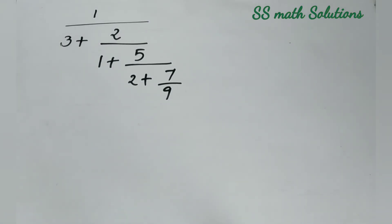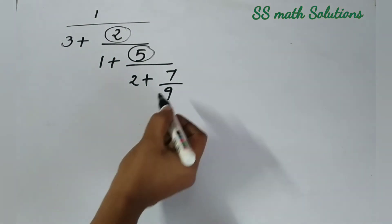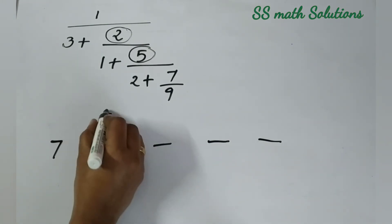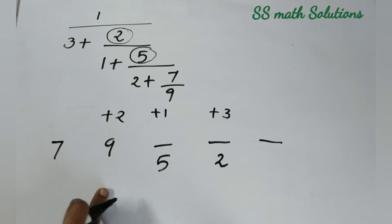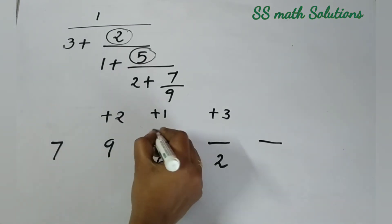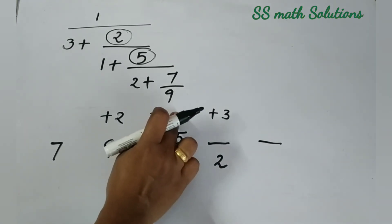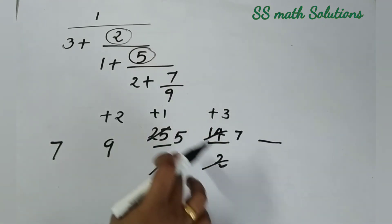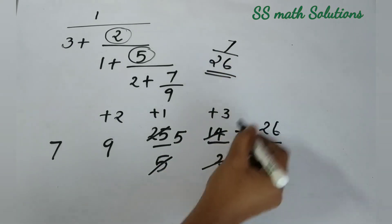One more question: 1 divided by 3 plus 2 divided by 1 plus 5 divided by 2 plus 7 by 9. Here also numerators 2 and 5 are present. We take 7 and 9 here, count 1, 2, 3 extra numbers, and start from the second number: plus 2, plus 1, plus 3. Write denominators 5 and 2. Now 9 into 2 is 18, plus 7 is 25. Cancel 5 and 25 to get 5. Then 5 into 1 is 5, plus 9 is 14. Cancel 2 and 14 to get 7. Then 7 into 3 is 21, plus 5 is 26. Since '1 divided by' is there, the answer is 7 divided by 26.